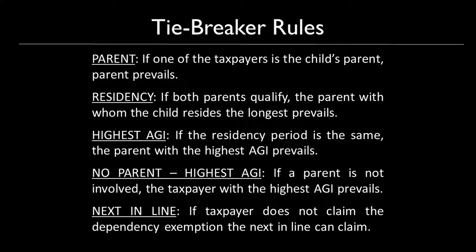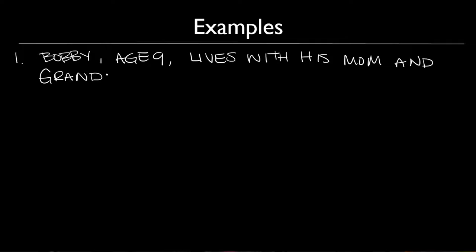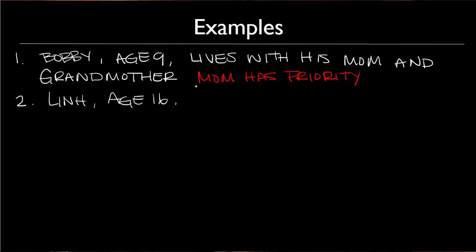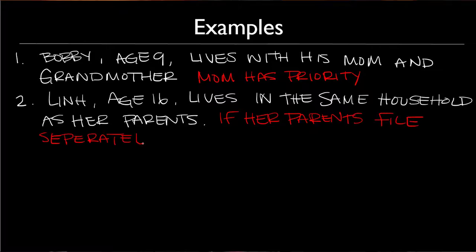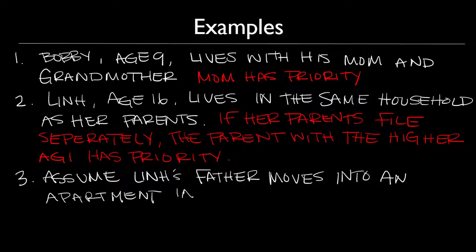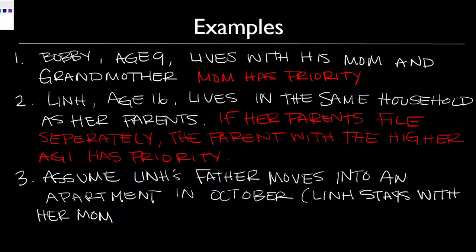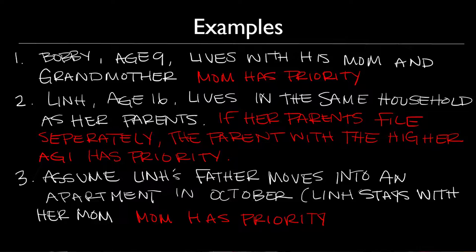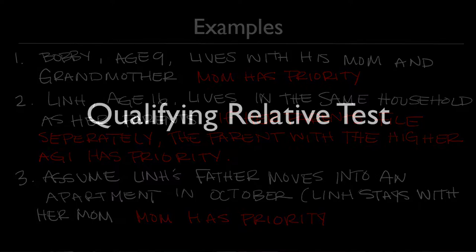If the taxpayer does not claim the dependency exemption, the next in line can then claim it. For example, Bobby is age 9 and lives in the same household with his mother and grandmother — mom gets priority to claim the dependency exemption. Another example: Lien is age 16 and lives with her parents during the entire year. If her parents file separate returns, the one with the higher AGI has priority. Now assume Lien's father moves into an apartment in October and Lien remains with her mother — the person with the longest residency prevails, so her mother gets priority.